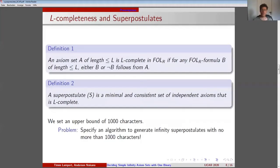Due to our second device, we modify our ambitious aim to preserve completeness and replace it by the weaker aim to preserve completeness of axiom sets up to specific lengths L. Let us define L-completeness as follows: an axiom set A of length less or equal L is L-complete in FOLR if for any FOLR formula B of less or equal length L, either B or non-B follows from A.